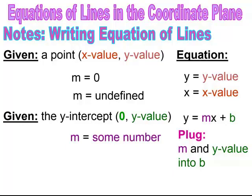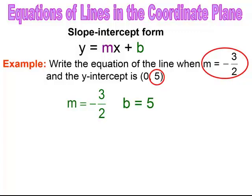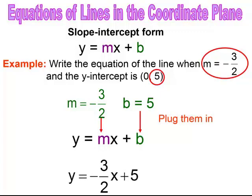You plug in the slope and the y value for b, and always remember you must have the x variable in y equals mx plus b. For example, if the slope is negative 3 halves and the y-intercept is (0, 5), you substitute to get y equals negative 3 halves x plus 5. That's the equation of the line given slope and y-intercept.